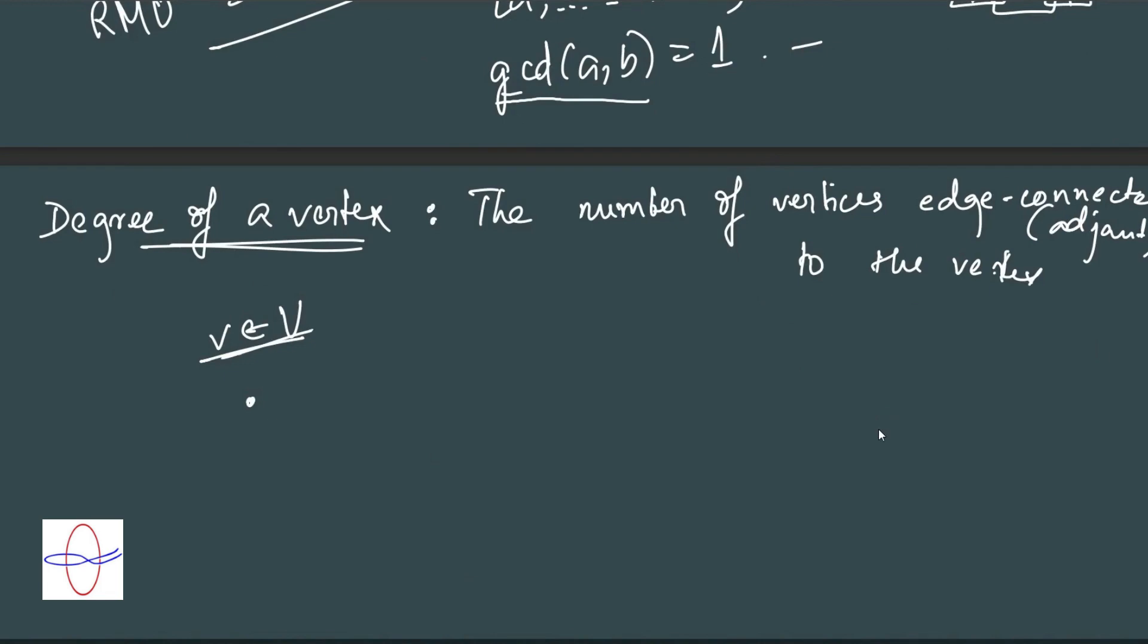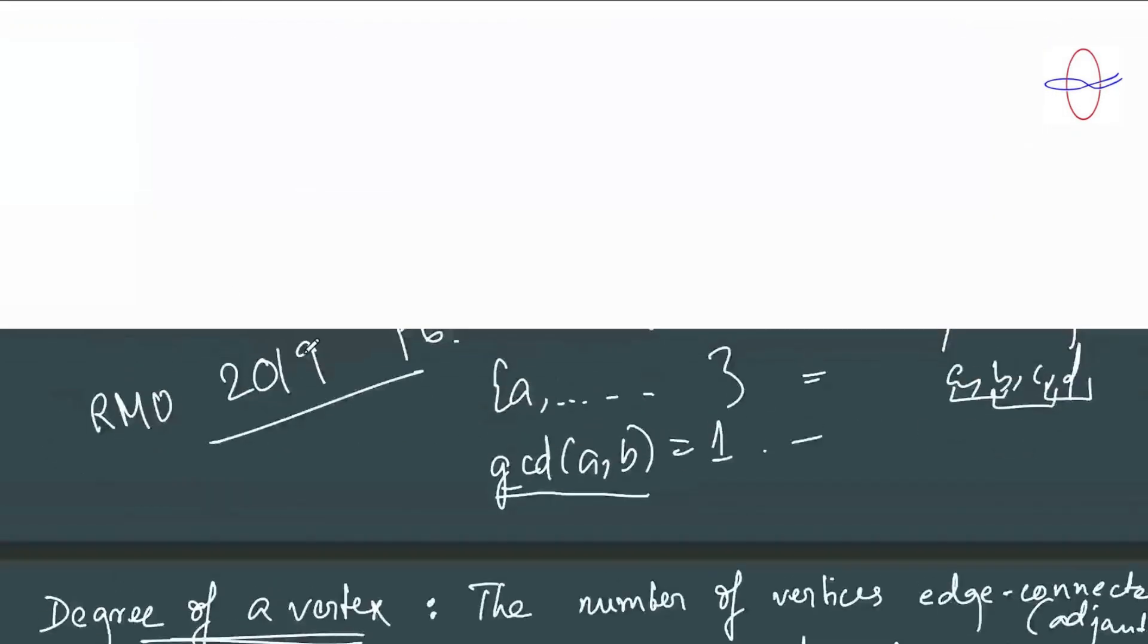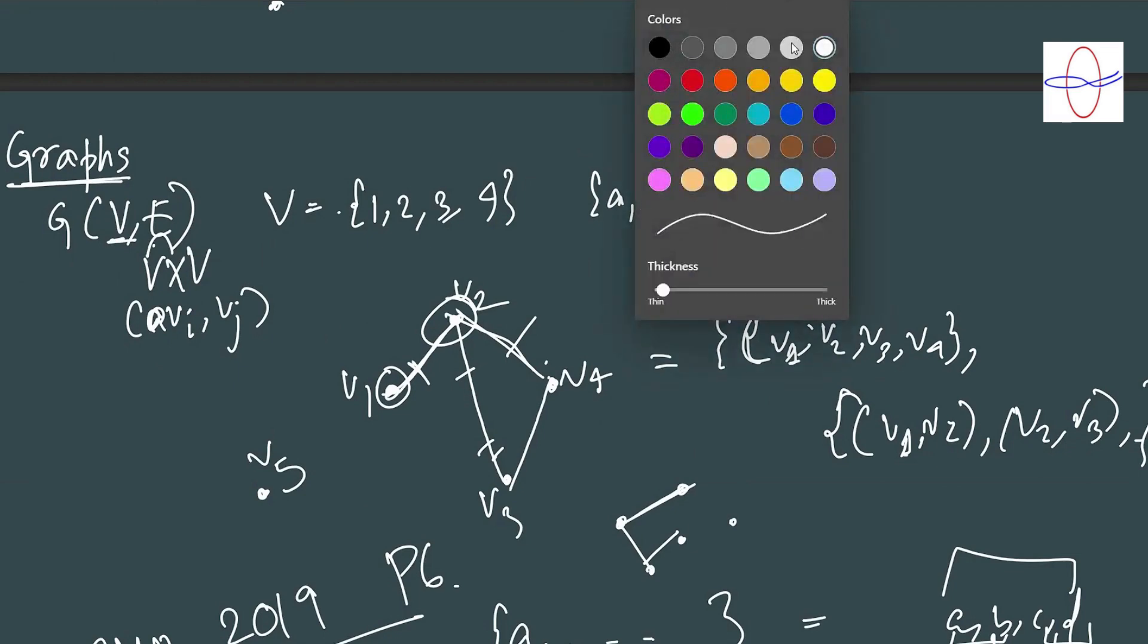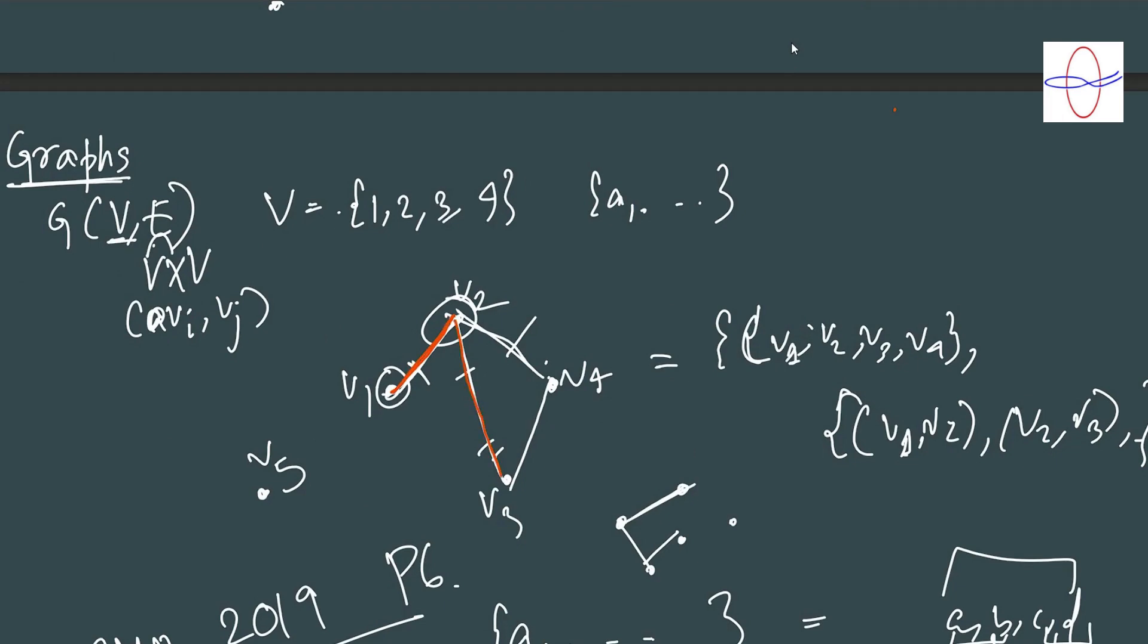We also have some other notions. We have the notion of a walk. A walk in a graph is just a sequence v1, v2, dot dot dot, vn. There is no restriction on what these vertices can be. They don't need to be distinct and the edges that appear between these vertices don't need to be distinct. So for example, in our example graph, the sequence v1, v2, back to v1, back to v2, v3, v4, v2 could be considered a walk. This is a fine example of a walk.